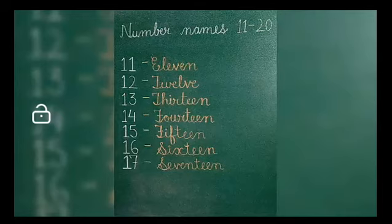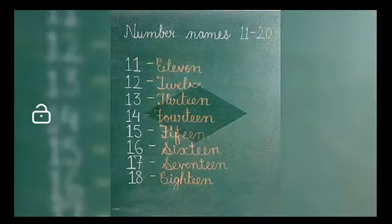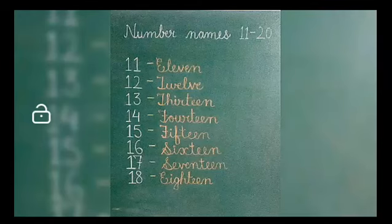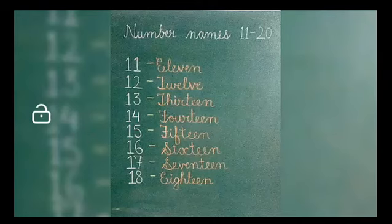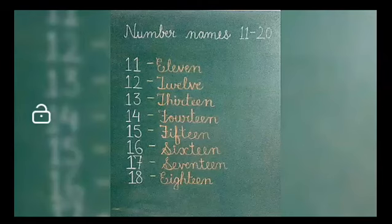Next number name is eighteen. EIGHTEEN. Kids, when vowel E comes with I, G, H, T, then it sounds as EIGHT. EIGHT. Because E, I vowel blend make sound of A. EIGHTEEN.